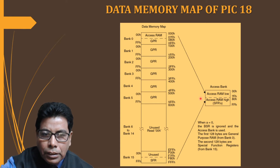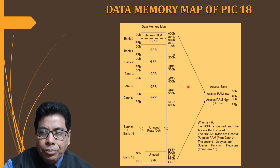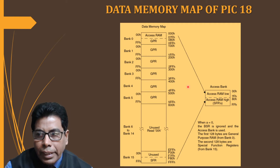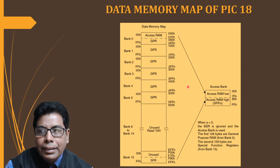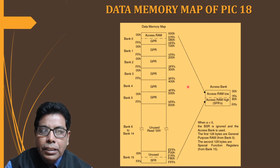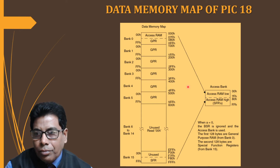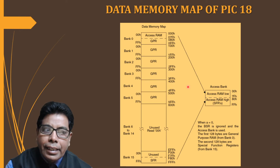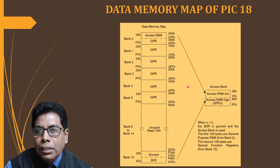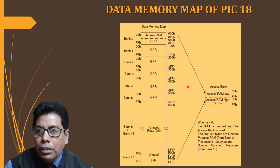In direct addressing, the BSR (bank select register) provides a 4-bit address that is combined with the 8-bit address specified in the instruction, resulting in a 12-bit address. In indirect addressing, the file select register (FSR) holds the address of the data register, and the processor uses the FSR to access the data register.